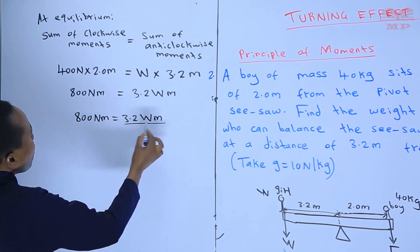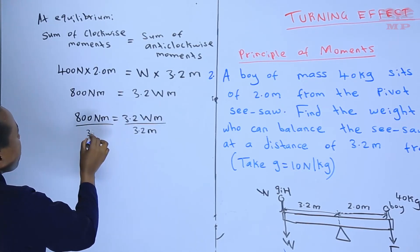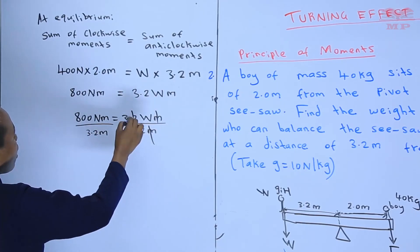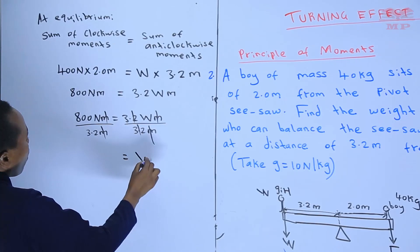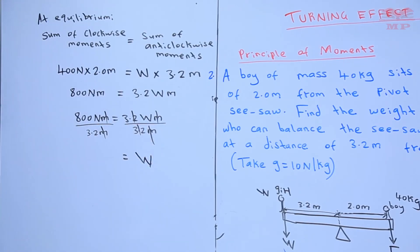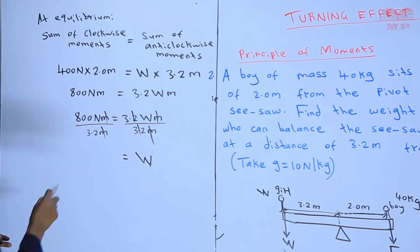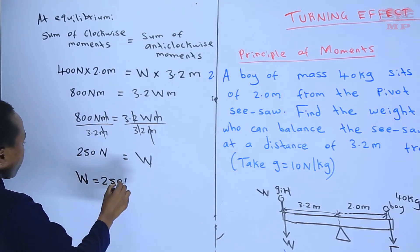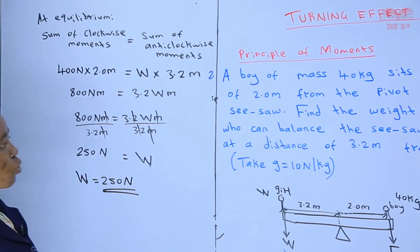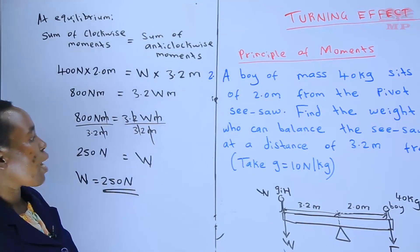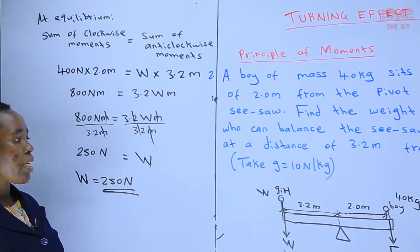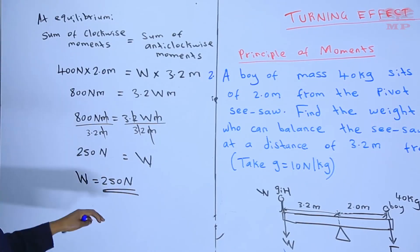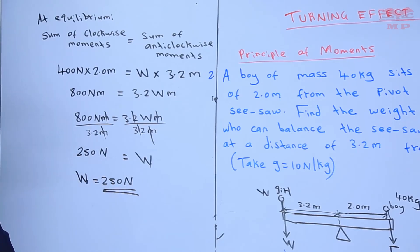To get the value of W, we divide both sides by 3.2 meters. So W = 800 ÷ 3.2 = 250 newtons. The weight of the girl is 250 newtons. That is what we were asked to find — the weight of the girl who balances the seesaw by sitting at a distance of 3.2 meters from the pivot.